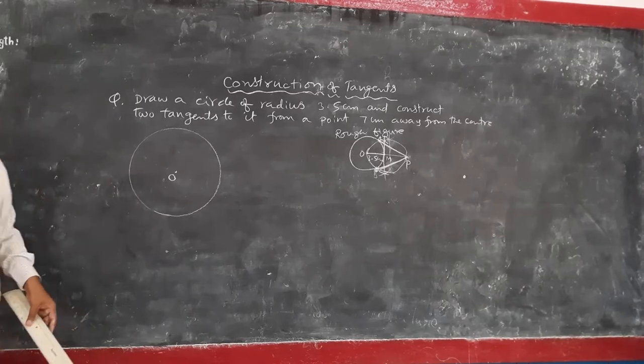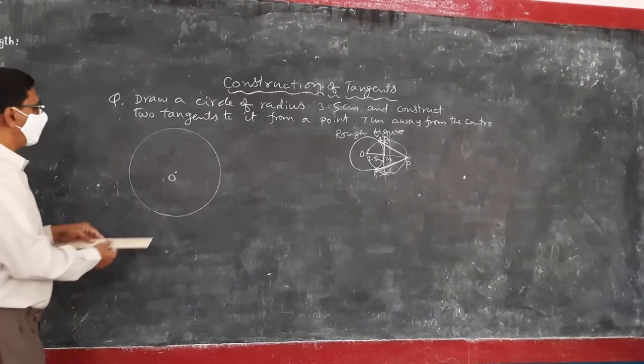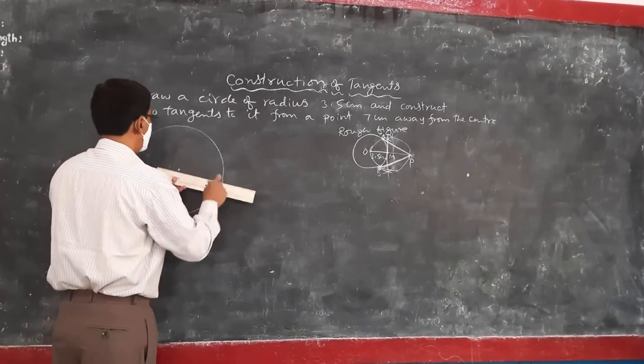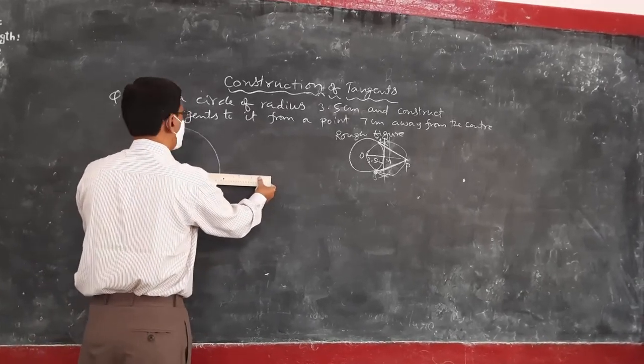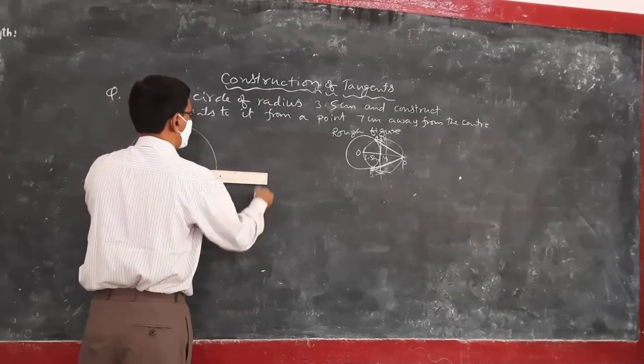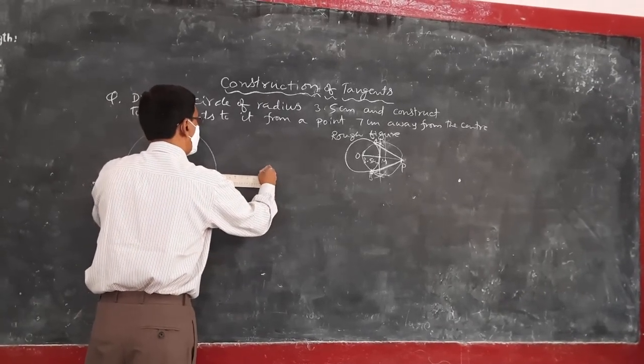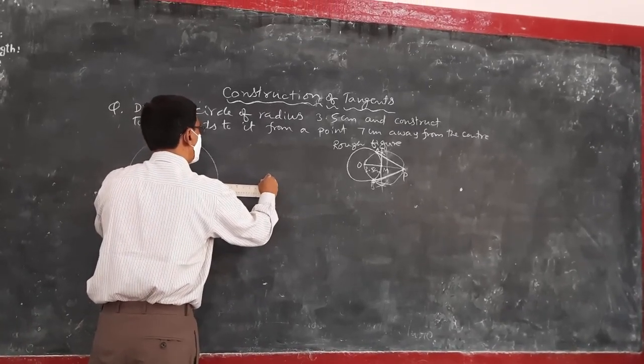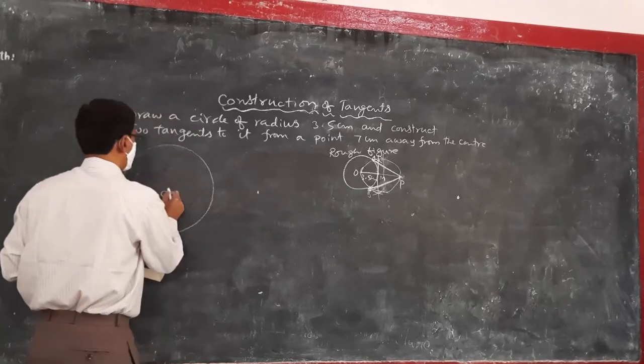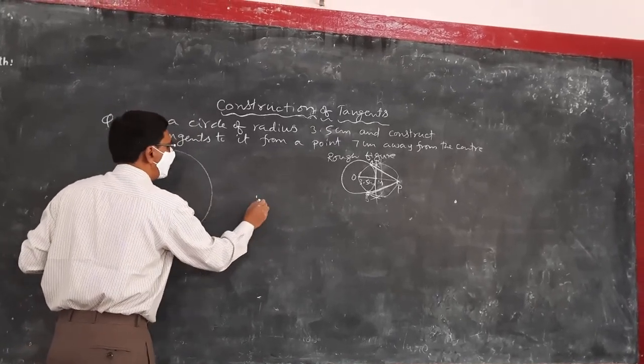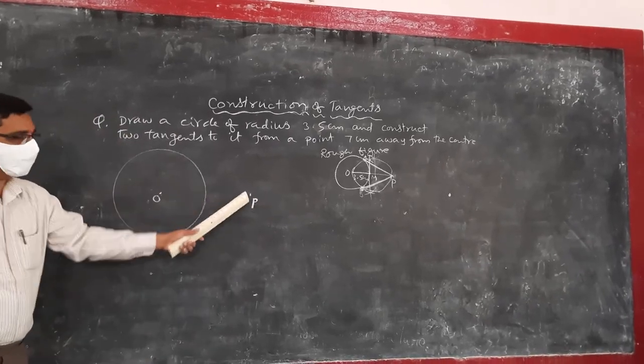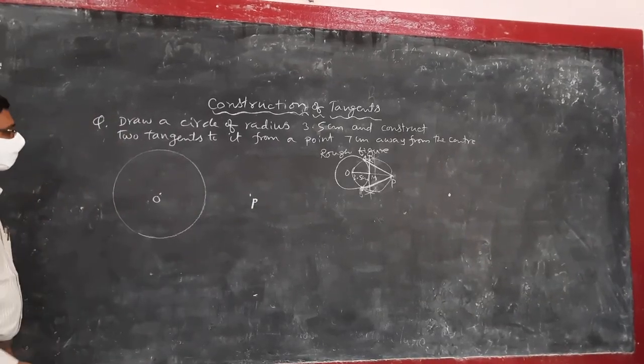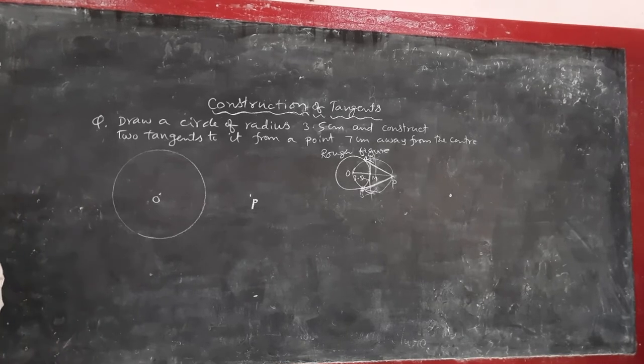After constructing the circuit, take the scale again. 7 cm from the center. This is O. This is P. The P is 7 cm from the center O.